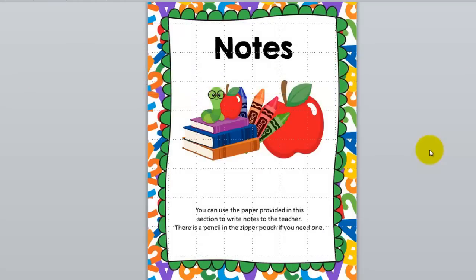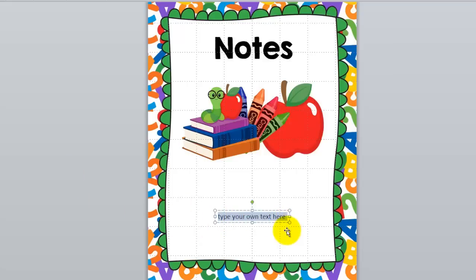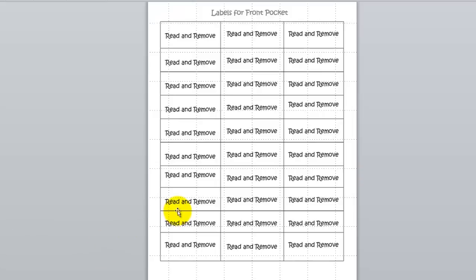This is the school theme organizational binder — by far the most popular. This is the notes section page. I usually put blank paper behind this page, and if a parent would like to write me a note they're welcome to do that. Notes can include written permission for a child to change their dismissal method, absences, doctor's notes, things like that. I also put 'read and remove' labels on the front pocket of the inside of the binder for notes from home or notes from the office to send home.